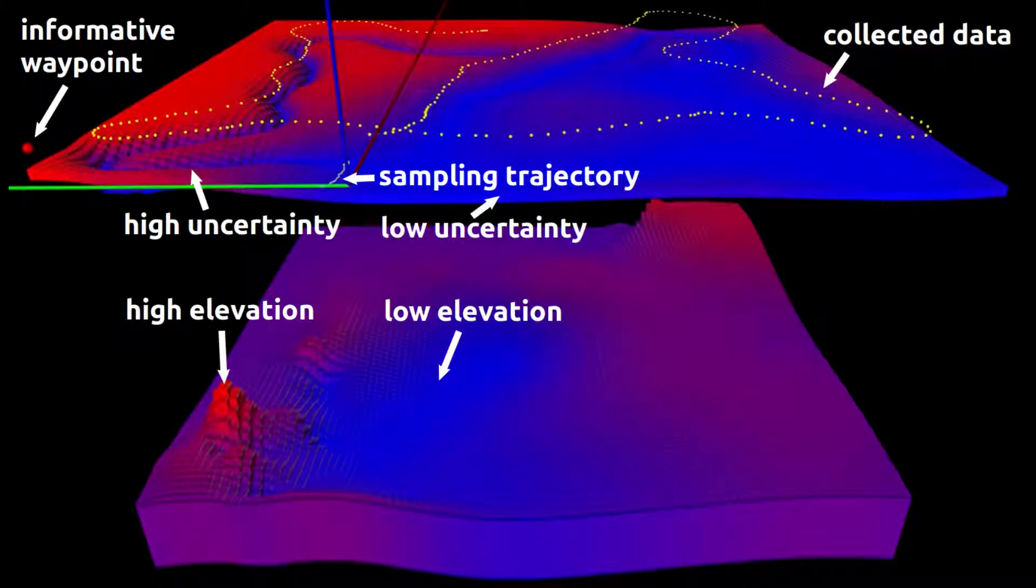Based on these measurements, a Gaussian process regression gives the predictive elevation map at the bottom, and the prediction uncertainty map at the top.